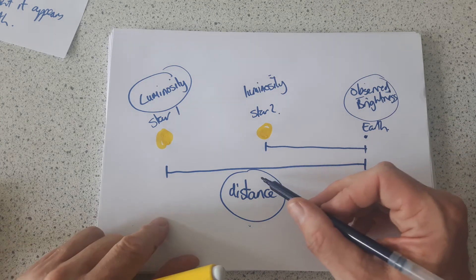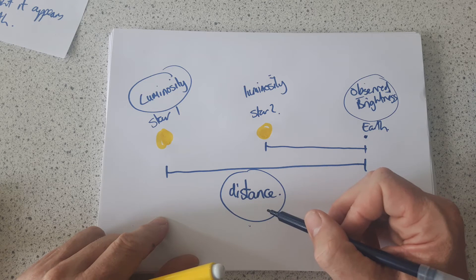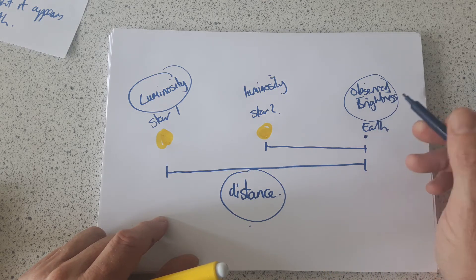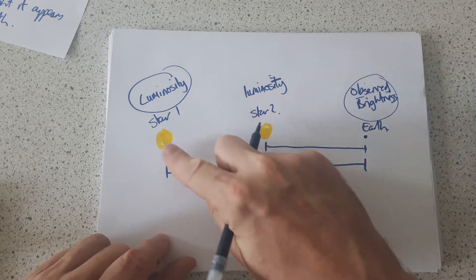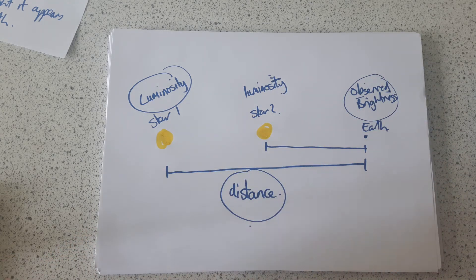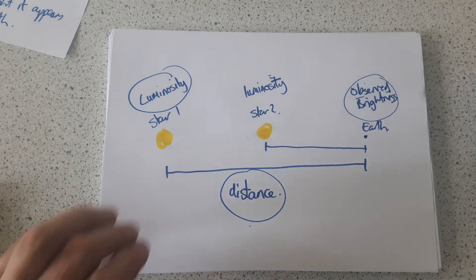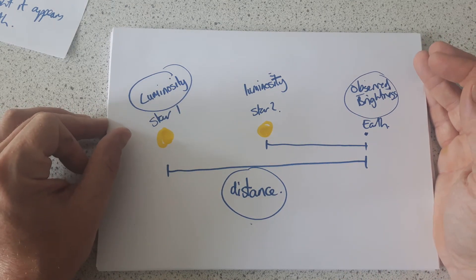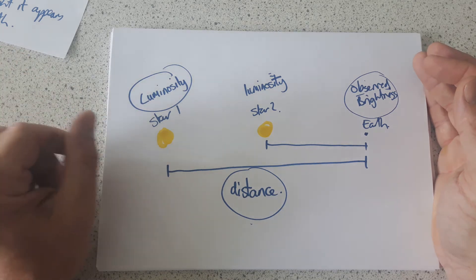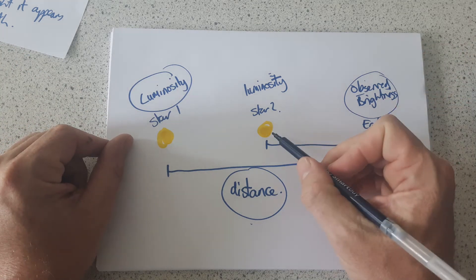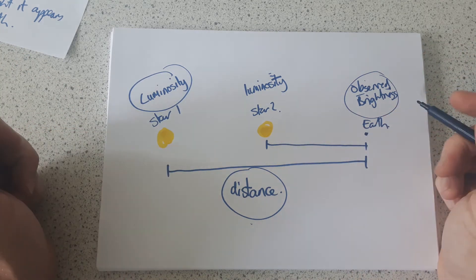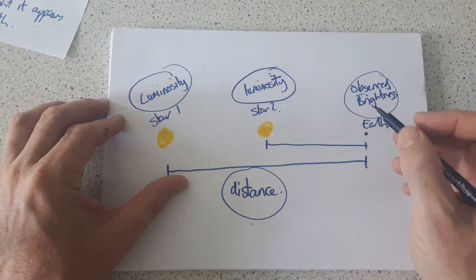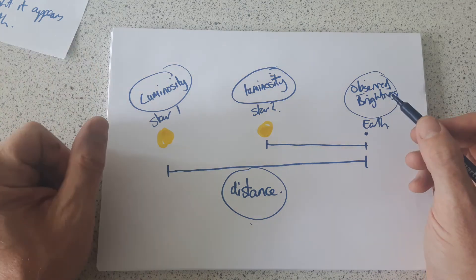So we can have an idea of the distance a star is away by comparing its observed brightness. Now if all stars had the same luminosity, it would be very straightforward to work out how far away they were — we'd assume they're all the same brightness, therefore the brightest ones must be nearer and the dimmer ones further away. But unfortunately, not all stars have the same luminosity — they've all got different luminosities.